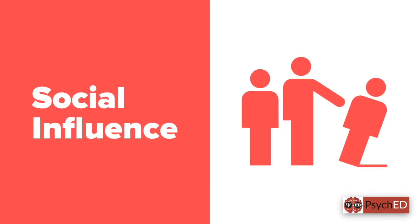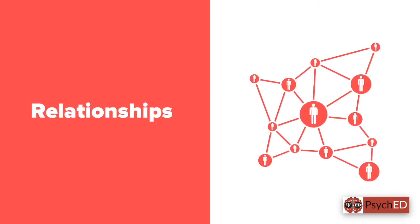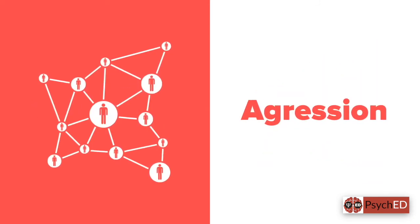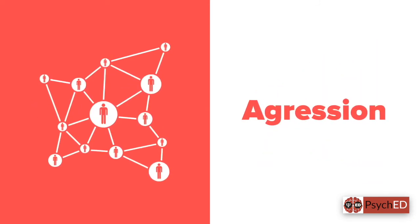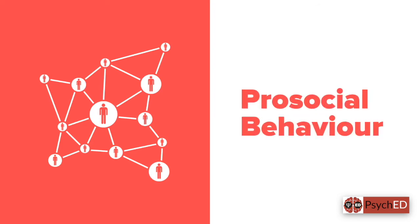The next subtopic is social influence, in which we are interested in culture and the psychology of persuasion and topics like social conformity. Lastly, the social relationship area is interested in topics like aggression, pro-social and helping behavior, and attraction and romantic relationships.